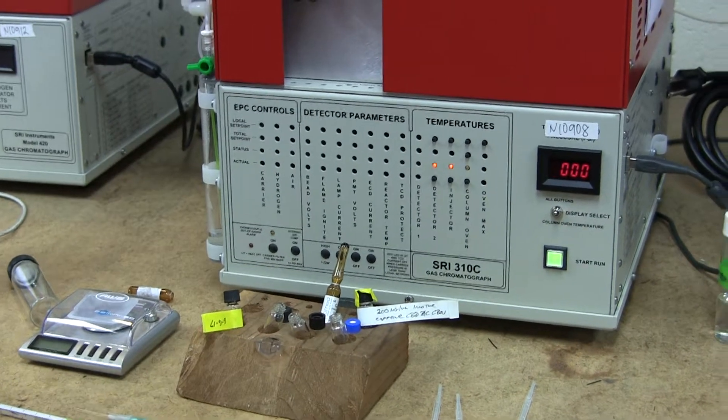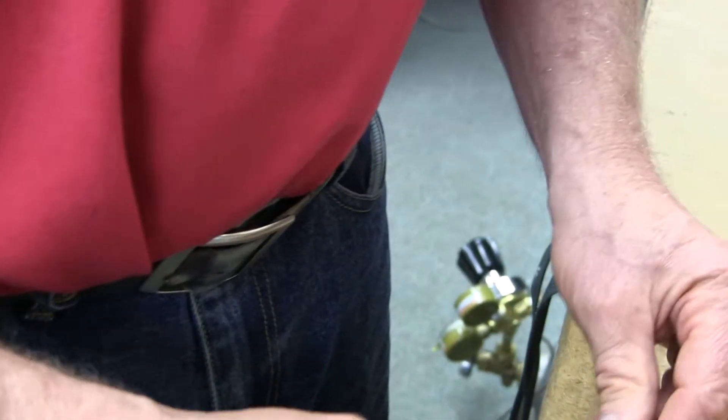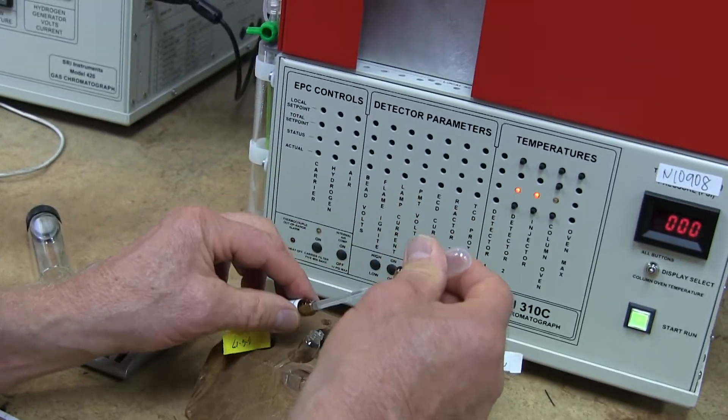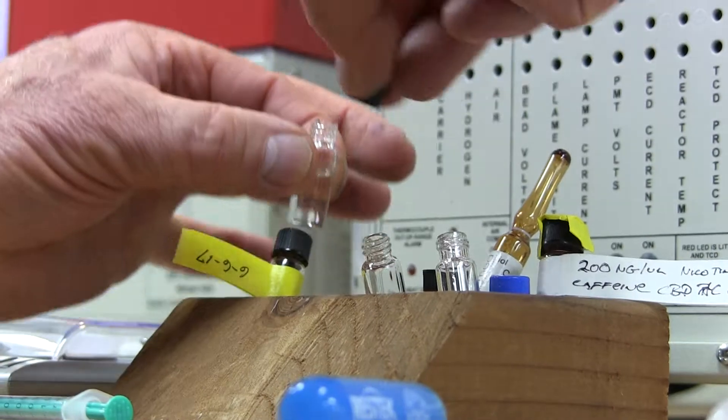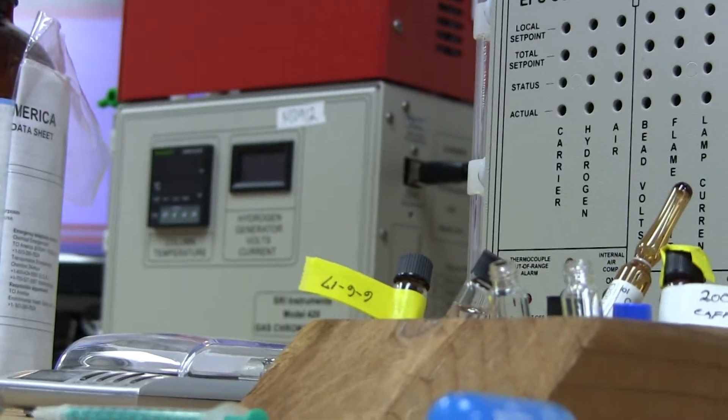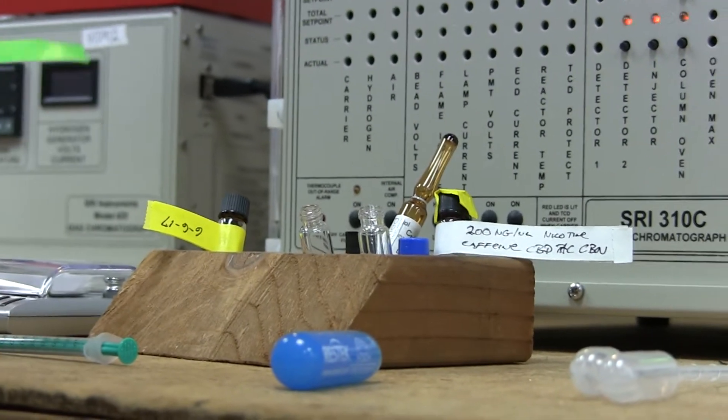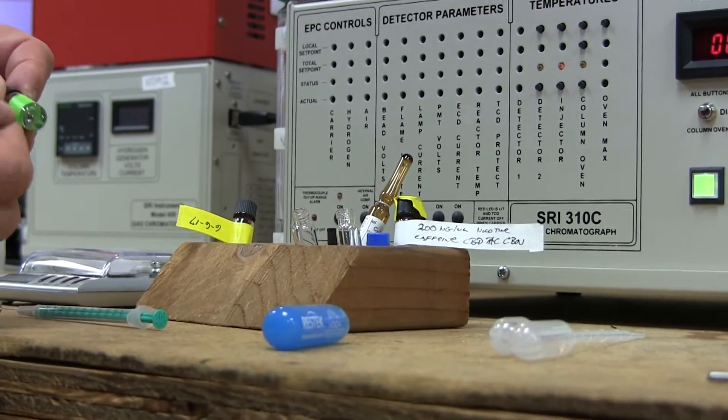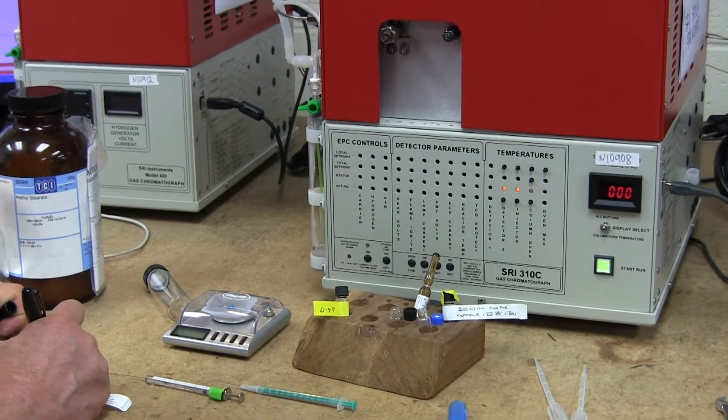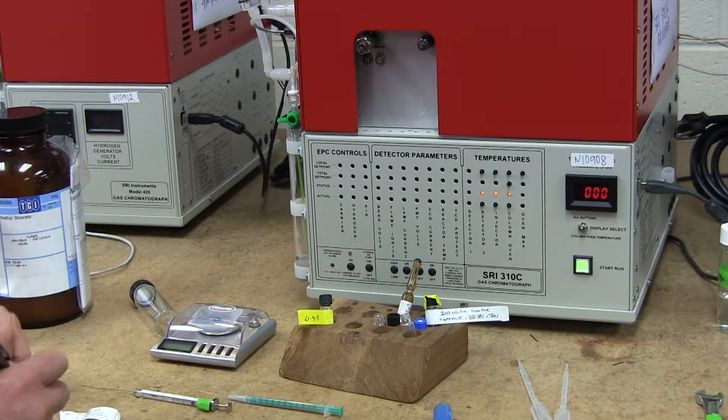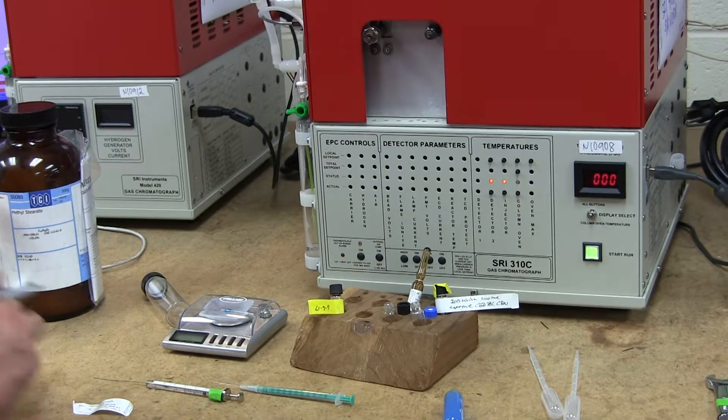So we'll go ahead and do the same thing for the THC. This is the Delta 9 THC. Snap it off. Take a nice clean disposable pipette. Transfer that into the 1 mil bottle. Throw these glass bottles away. Cap the little bottle. Make a label. And so this is 1,000 nanograms per microliter of Delta 9 THC. And I took it out of the bottle today and it's 6-6-17.